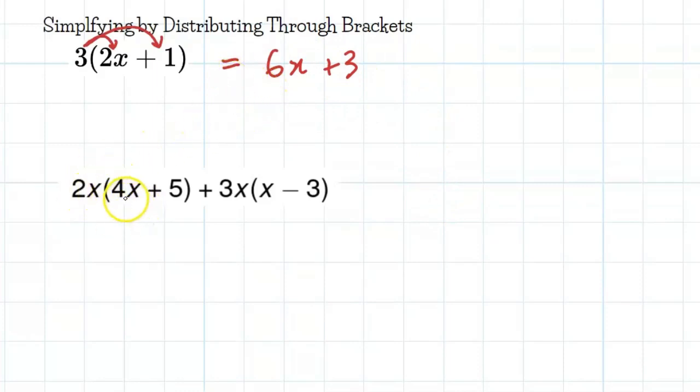So we have 2x times in brackets 4x plus 5 plus 3x times in brackets x minus 3. So I'm going to take this term here, and I'm going to draw my little arrows to remind myself to multiply it both through. And here, I'm just going to give you a clue. I'm going to take the sign as well, but I'll show you that in the next example. And I'm going to multiply it through. All right, so this one, 2x times 4x. 2 times 4 is 8, and x times x is x squared. 2 times 5 is 10, and there's just 1x in there. So this is done now.